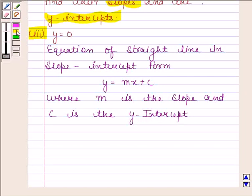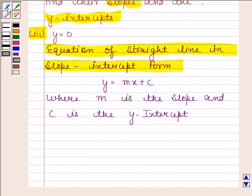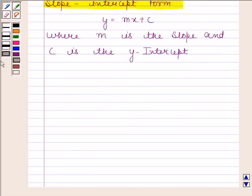Always remember that the equation of a straight line in slope-intercept form is y equals mx plus c, where m is the slope and c is the y-intercept. Let's now begin with the solution.